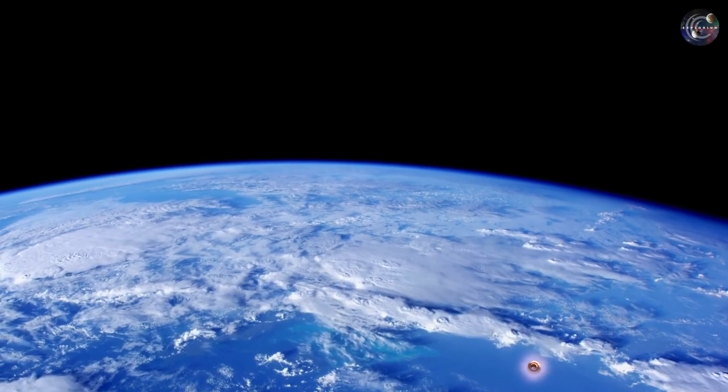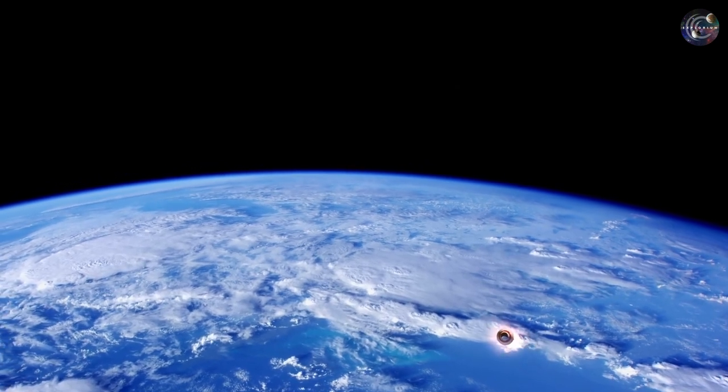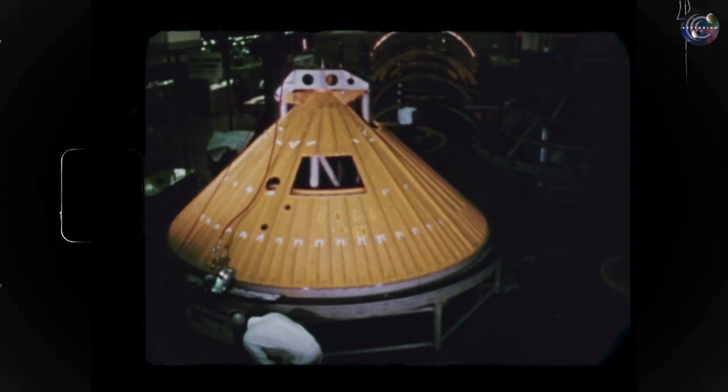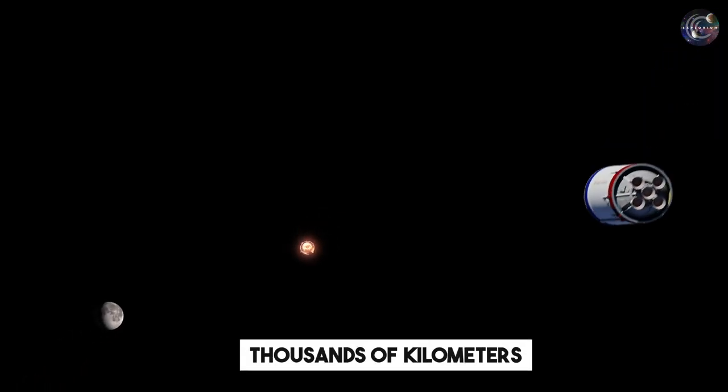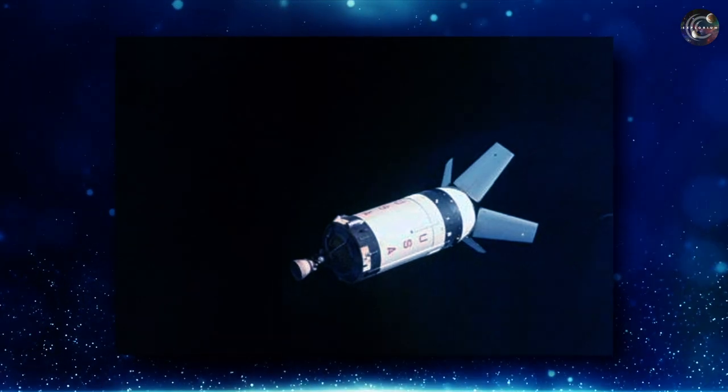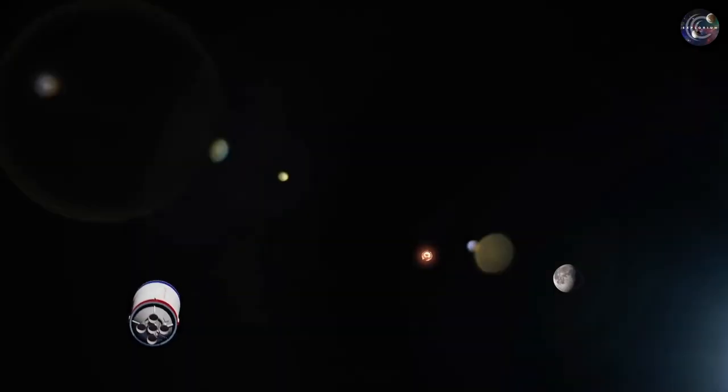The third stage employed its auxiliary propulsion systems, which consisted of two sets of thrusters at the bottom that enabled yaw, pitch, and roll control during flight. Despite the fact that it had to shift its location by thousands of kilometers, this used very little energy, because changing its trajectory so early in the mission would have a significant impact after it reached the Moon.